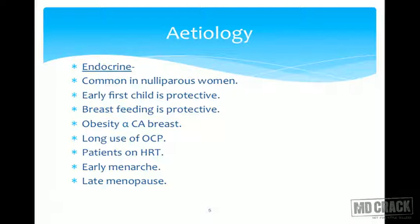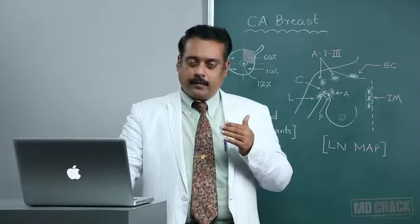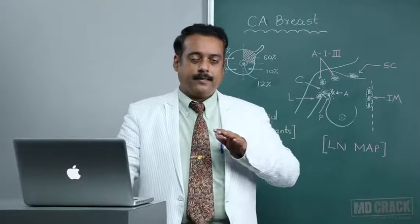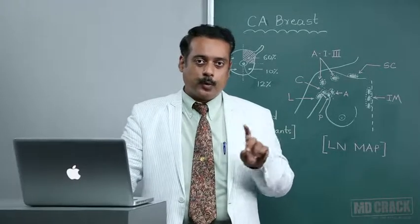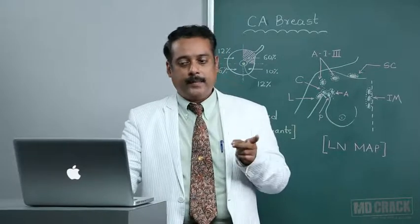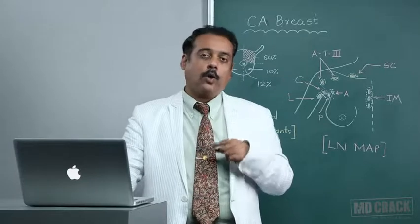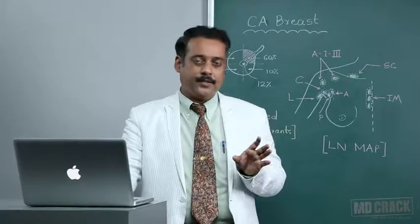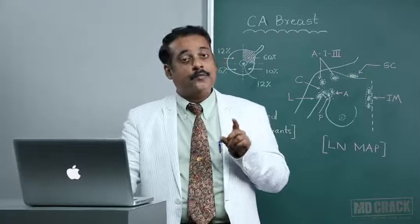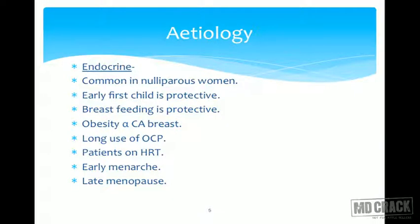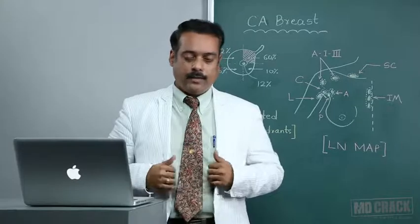Obesity is directly proportional to development of CA breast — the more obese the female, the higher the chance. Some females, due to hectic lifestyles, avoid childbirth and remain on oral contraceptive pills for prolonged periods, increasing the risk through hormonal adjustment. Patients on hormonal replacement therapy for conditions like PCOD are also prone to developing CA breast. Early menarche and late menopause are directly proportional to CA breast development — the longer the reproductive span, the greater the risk.